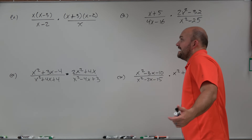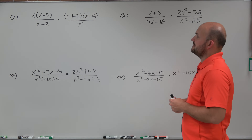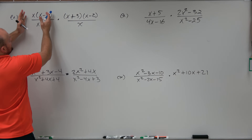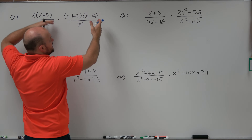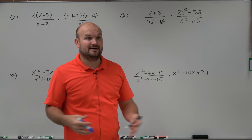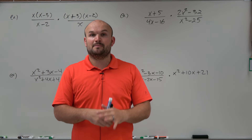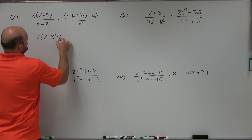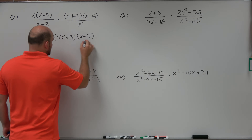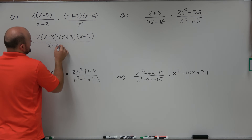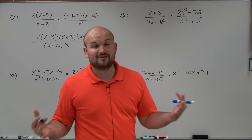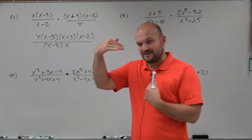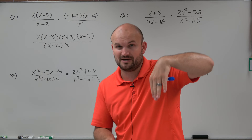In my first example, I have x times (x minus 3) over (x minus 2)(x plus 3), times (x minus 2) over x. There's nothing I can simplify in either fraction separately. So since there's nothing to simplify, we're going to multiply numerator times numerator and denominator times denominator to create one big fraction. I get x times (x minus 3) times (x plus 3) times (x minus 2), all over (x minus 2) times x. Now everything is in this big fraction, and I can apply the division property — when a term appears in both numerator and denominator, they divide to 1.